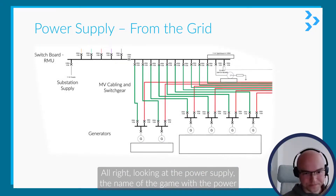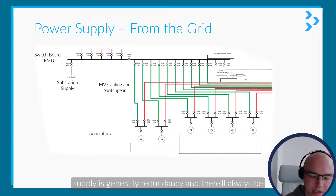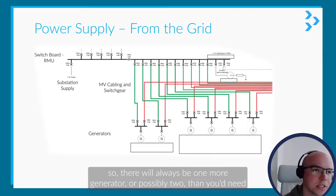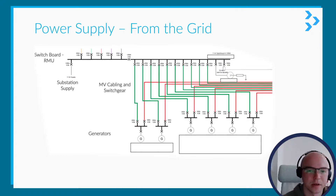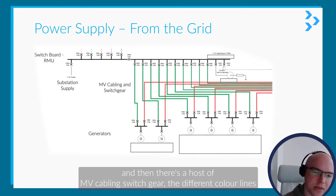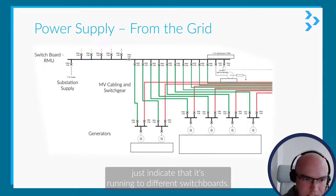Looking at the power supply, the name of the game is generally redundancy. There'll always be generators and they operate on an N+1 philosophy, so there'll always be one more generator — possibly two — than you'd need to run the equipment. How it's set up on this drawing, there are generators at the bottom and then a host of MV cabling switchgear, with different color lines indicating runs to different switchboards.